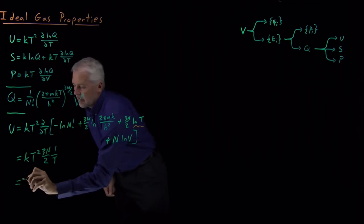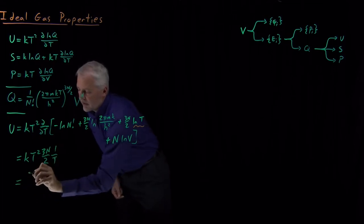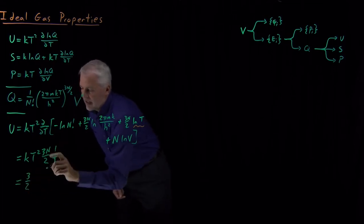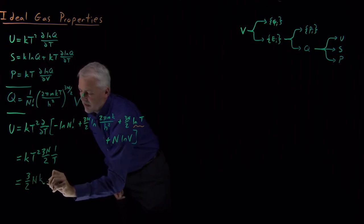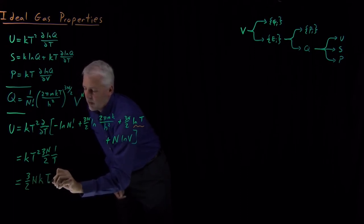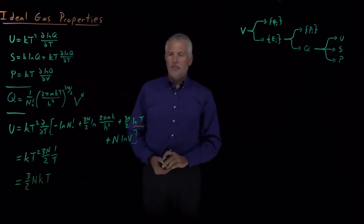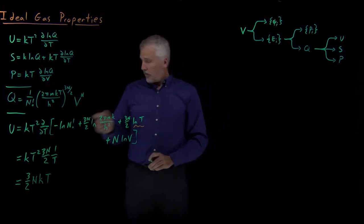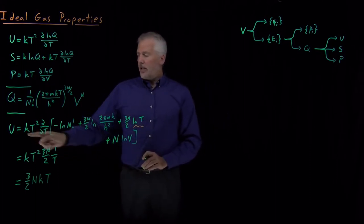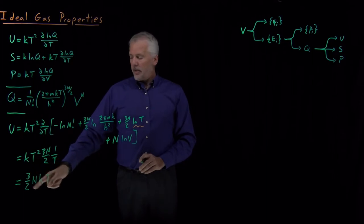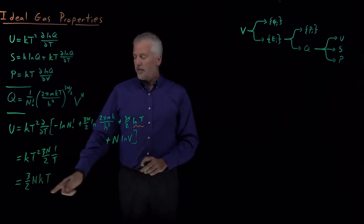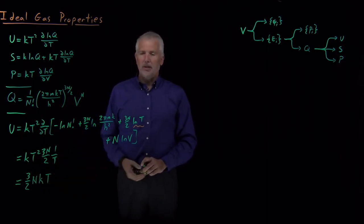So I've got a t squared that is partially canceled by this 1 over t, and in the end I've got, let's see, the 3 over 2 as my constant. I've got a capital N, I've got a Boltzmann's constant k, and I've got 1t that survives. So we've discovered that for an ideal gas, the internal energy is 3 halves n k t, 3 halves times the number of molecules times Boltzmann's constant times temperature.